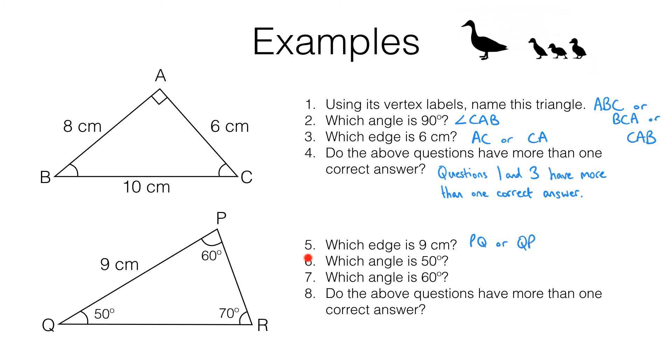In question six, we have to name the 50 degree angle, that is this angle here. Now going in an anti-clockwise direction, you'll see we have to start at P. So this angle here is angle PQR. Don't forget the angle symbol, there it is, PQR. And notice that the middle letter there is Q. That is where the angle is actually located.